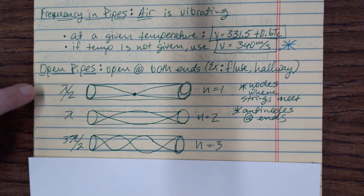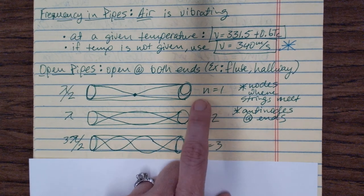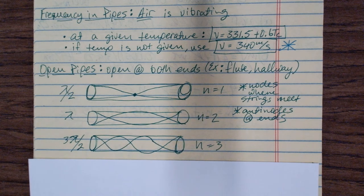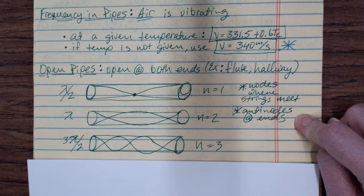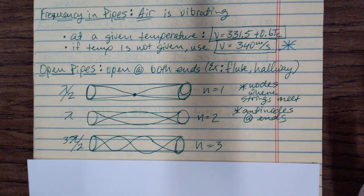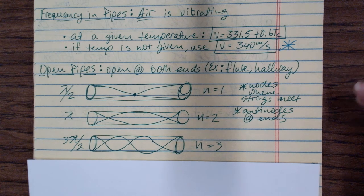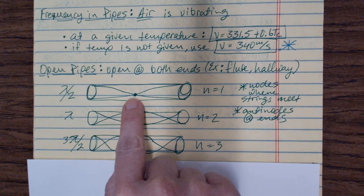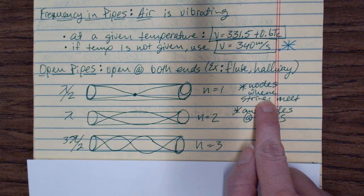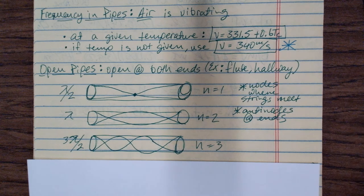For an open pipe, n equals 1 is the first harmonic. In strings, n was equal to the number of antinodes. In pipes, n is equal to the number of nodes — the antinodes are always at the ends. The places with the most energy and most vibration are at the ends of the pipes, which is why a pipe organ vibrates most at the ends to make that beautiful sound. Nodes are where the waves meet.